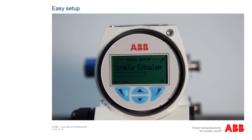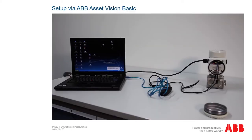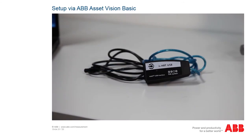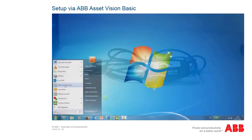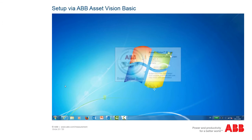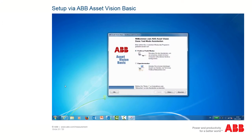To perform zero point correction, regulate the process to the lowest value, then confirm the menu item and the pressure transmitter performs an automatic calibration. In addition to configuration via the display, you can configure and operate the pressure transmitter completely via a computer. To do this, connect the pressure transmitter to the computer via an IFAC modem and start the ABB Asset Vision Basic software.